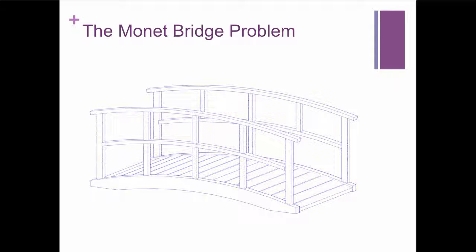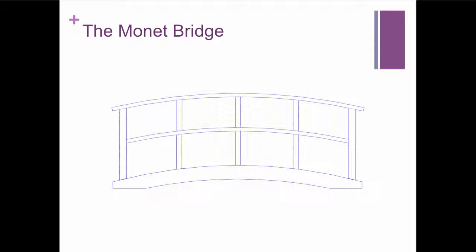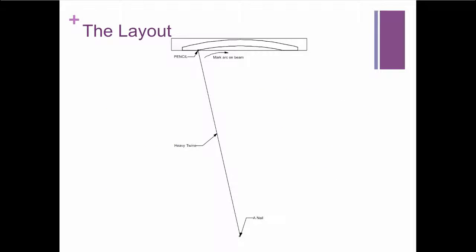Well, Dan wanted to put one of these in. He said, you know, we're putting a creek in and I want to have an authentic Monet bridge. So he said, I sent away for a set of plans. But the problem is the set of plans doesn't give me the radius that I need to lay out. You know, I need to lay out that arc on a beam and then cut it out.